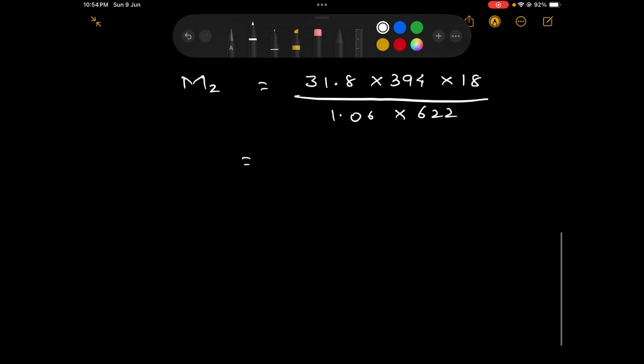Here we can use log. Let us take the characteristic. Before decimal we are having 2 digits, so it is 2 minus 1 that is 1. So the characteristic is 1. Here it is 394, 3 digits, so 3 minus 1, the characteristic is 2.